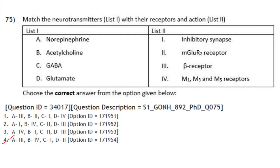Match neurotransmitters with receptors: Norepinephrine — beta receptor; Acetylcholine — M1, M3, M5 receptors; GABA — inhibitory synapse; Glutamate — mGluR2 receptor. Answer is option 4: A3, B4, C1, D2.